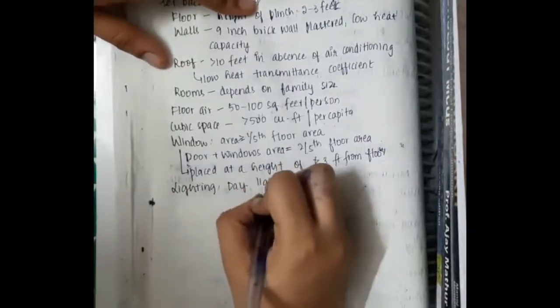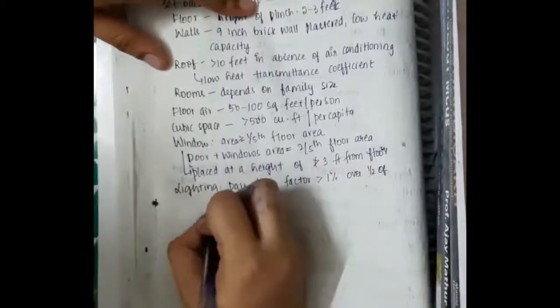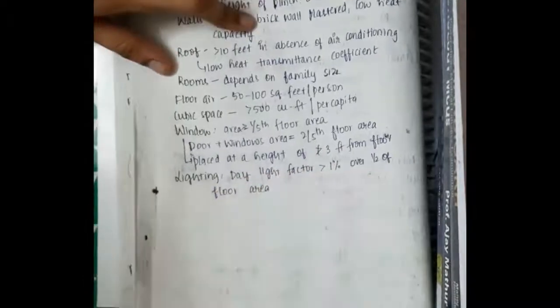Lighting, if you see, the daylight factor should be more than 1% over the half of floor area.